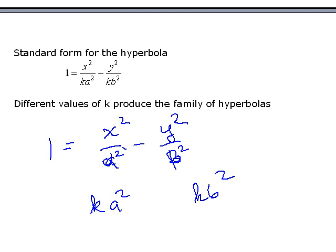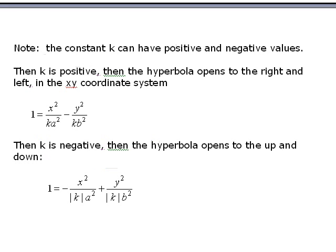As k changes you get different values here for the hyperbolas. And just like the circles this produces a family of nested hyperbolas. The one thing to notice in this case though is that k can be both positive and negative.